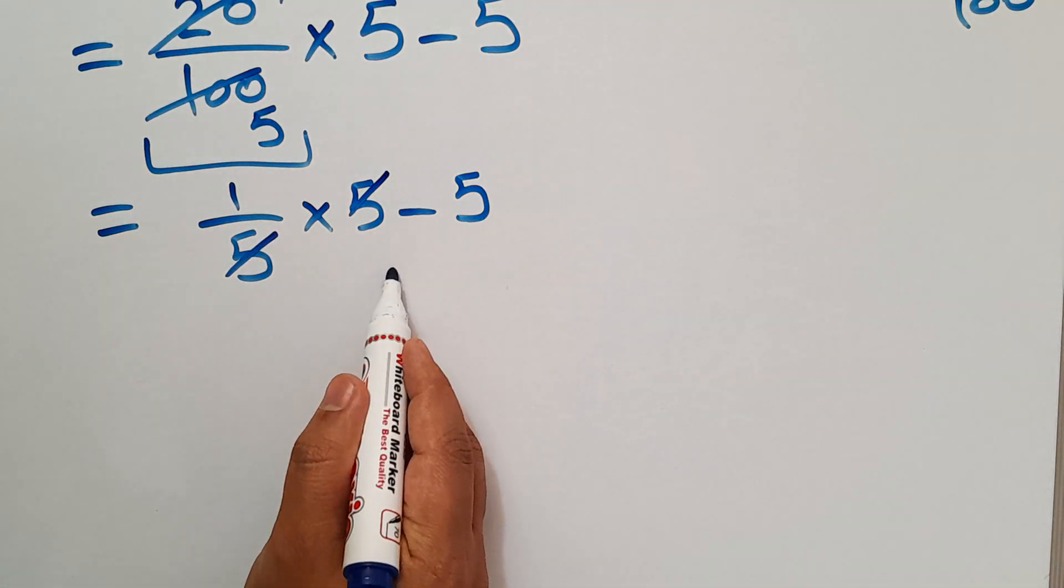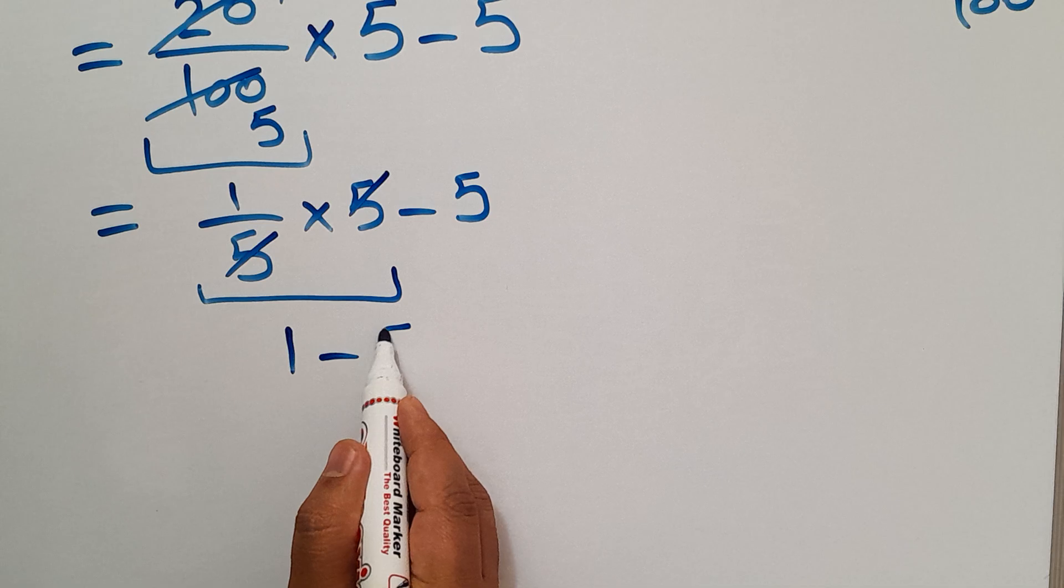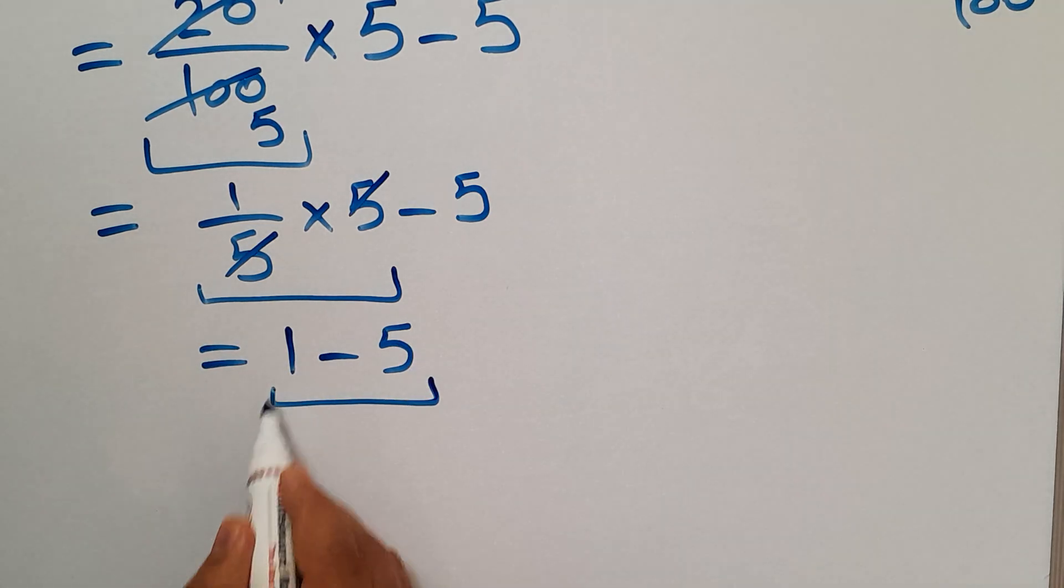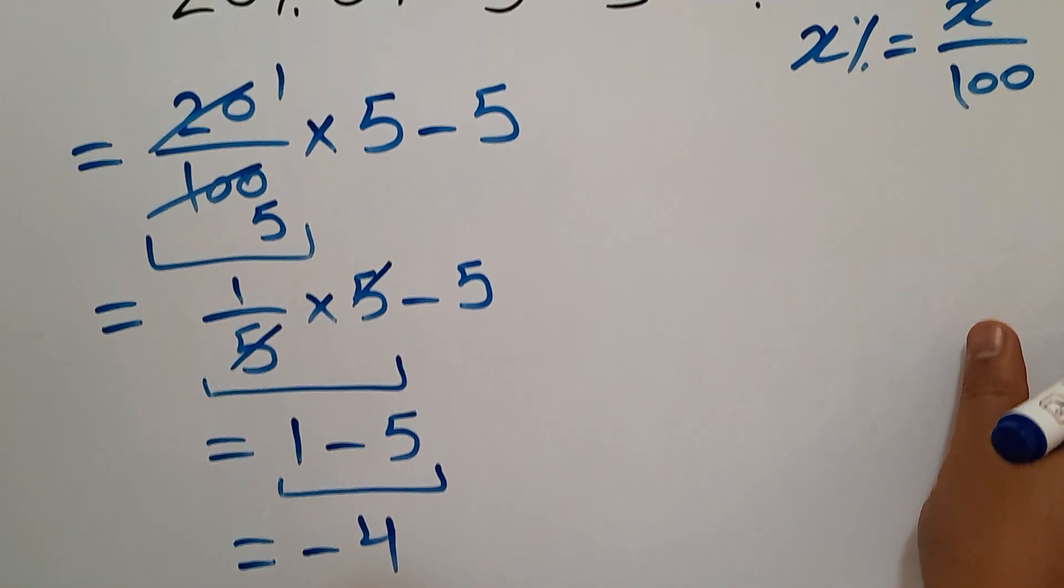So we have just 1 and minus 5. 1 minus 5 is just negative 4. So our final answer to this problem is negative 4.